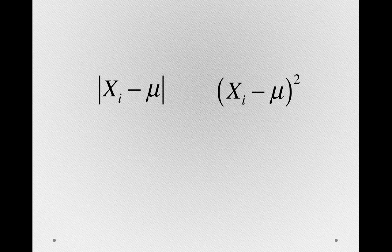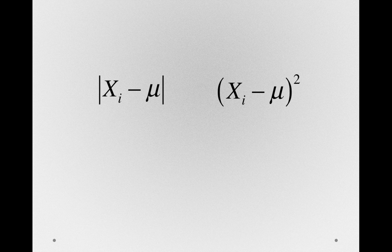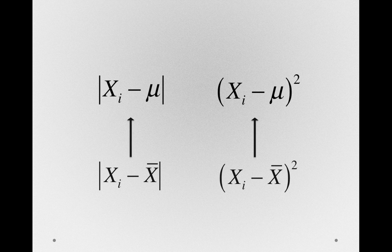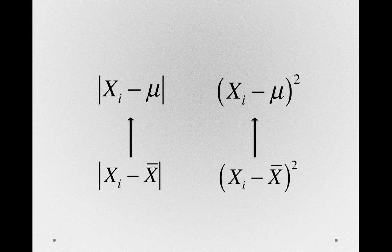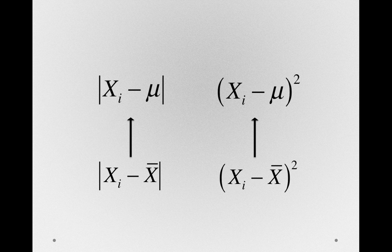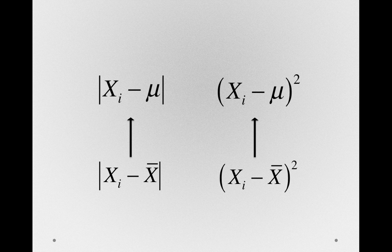Well, remember that we will, and eventually be, using sample data to make estimates of these population parameters. That is, we won't have access to μ, but we will have our sample mean. And so in our samples, we're going to be taking the deviations of our individuals to our sample mean and then operating on those deviates.